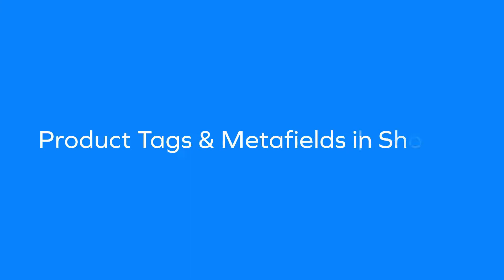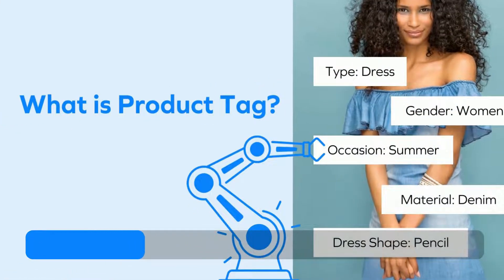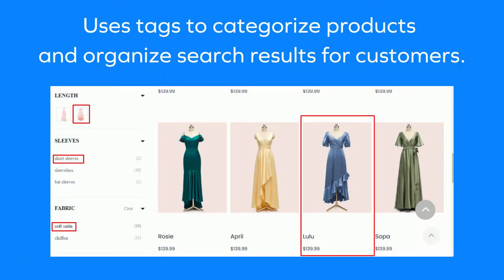Product tags and meta fields in Shopify: you can use tags to label products to help you stay organized and create automated collections. Customers can't see tags, but your online store search uses tags to categorize products and organize search results for customers. Tags are assigned to the whole product, including all of its variants.